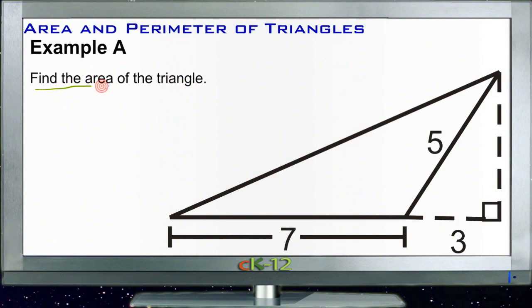All right, example A asks us to find the area of the given triangle. The triangle is not a right triangle. This is an obtuse triangle. This angle here is obviously significantly greater than 90 degrees.